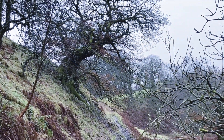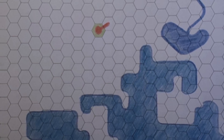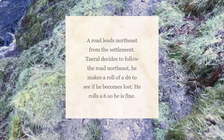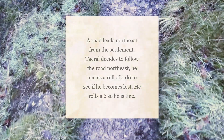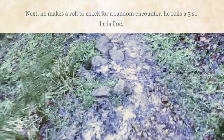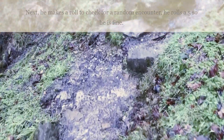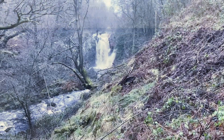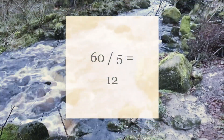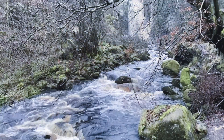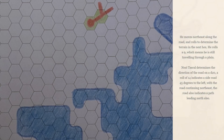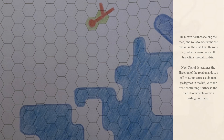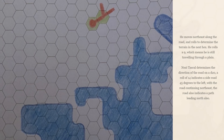Tyrell begins his adventure on a settlement built on a plain on the map. Each hex represents 6 miles. A road leads north east from the settlement. Tyrell decides to follow the road north east. He makes a roll of a d6 to see if he becomes lost — he rolls a 6, so he is fine. Next he makes a roll to check for a random encounter — he rolls a 5, so he is fine. Tyrell can move 60 feet per turn at normal speed, so in the wilderness he can move 12 miles per day (60 divided by 5 equals 12). He moves north east along the road and rolls to determine the terrain in the next hex — he rolls a 9, which means he is still travelling through a plain. Next Tyrell determines the direction of the road on a d20 — a roll of 14 indicates a side road 45 degrees to the left, with the road continuing north east; the road also indicates a path leading north.